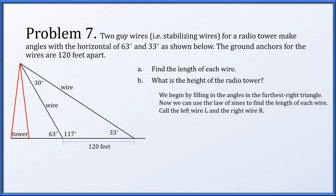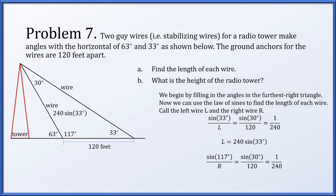Calling the left wire L and the right wire R, the law of sines gives sin(33°)/L equals sin(30°)/120. Since sin(30°) equals 1/2, this becomes sin(30°)/120 equals 1/240, so L equals 240 times sin(33°). Similarly, sin(117°)/R equals 1/240, so R equals 240 times sin(117°).